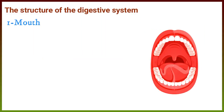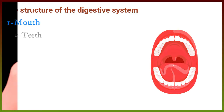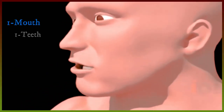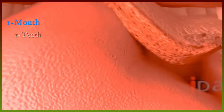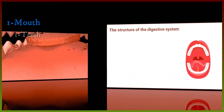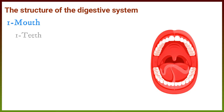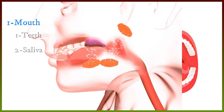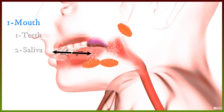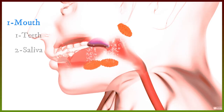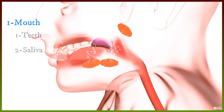Digestion begins in the mouth. The mouth contains: one — teeth, which break down and crush food during chewing; two — saliva, which is a liquid substance in the mouth that helps in the digestion of some types of food.